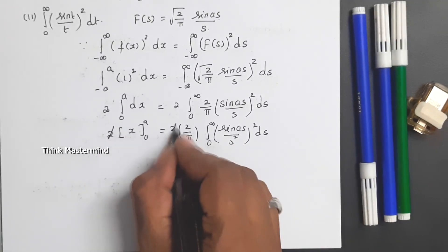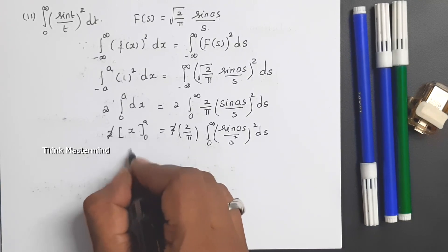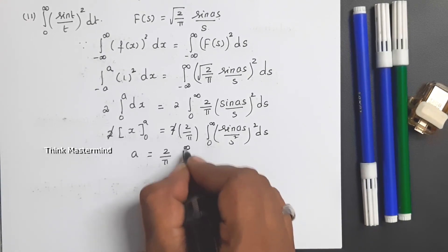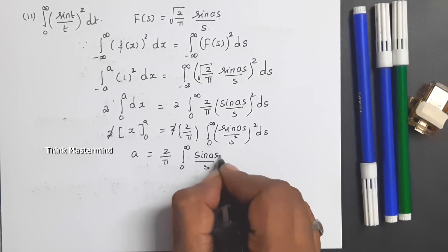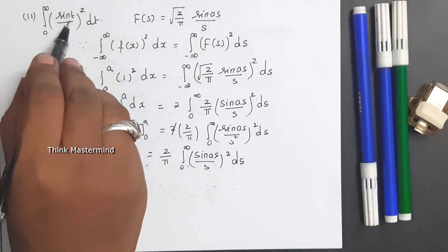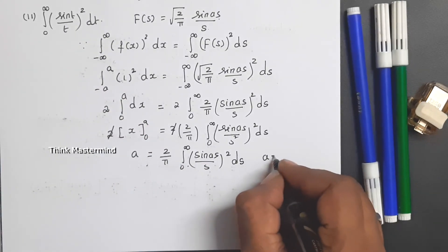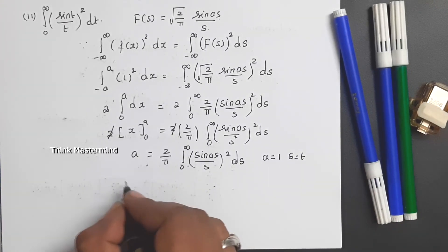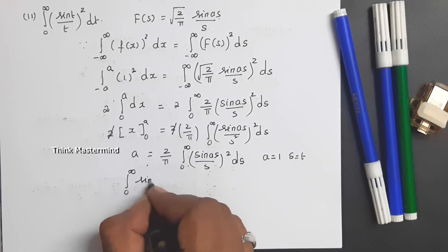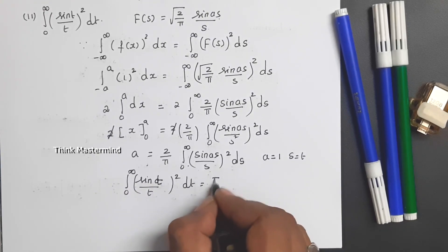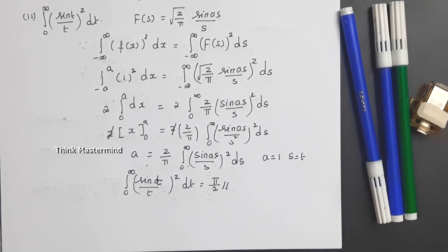Simplifying both sides: 2a = (4/π) ∫₀^∞ (sin(as)/s)² ds, so a = (2/π) ∫₀^∞ (sin(as)/s)² ds. Substituting a = 1 and s = t and cross-multiplying gives ∫₀^∞ (sin(t)/t)² dt = π/2. I hope this video is useful for you. Please subscribe and click on the bell button.